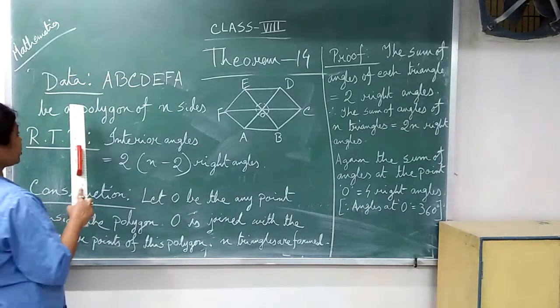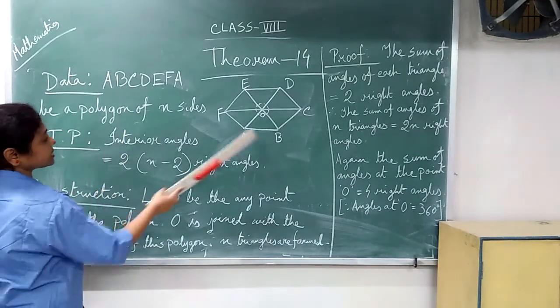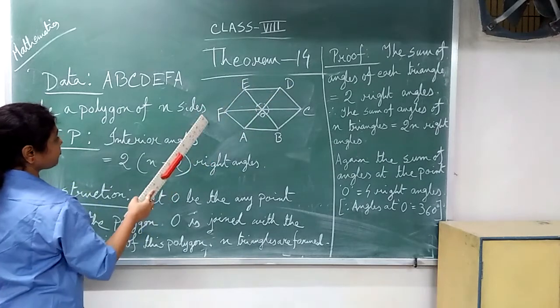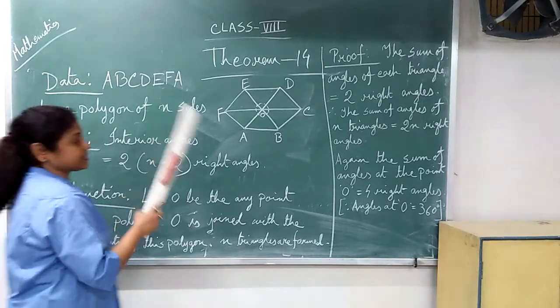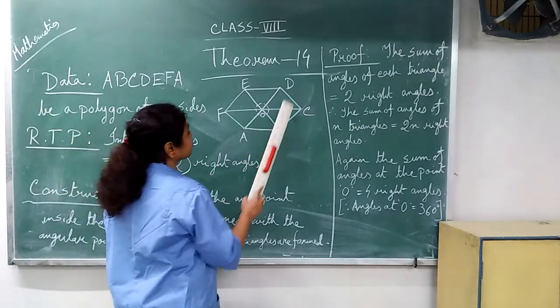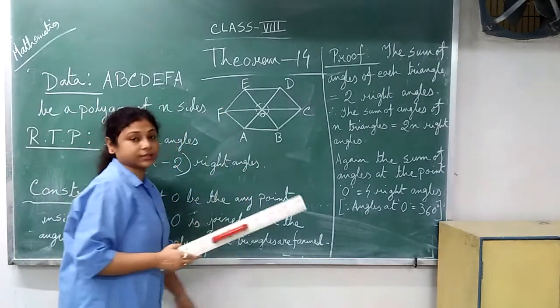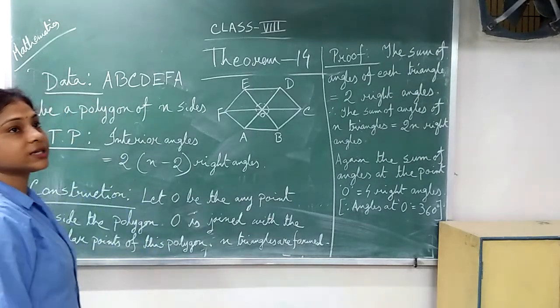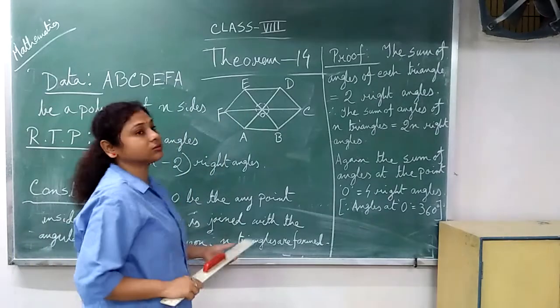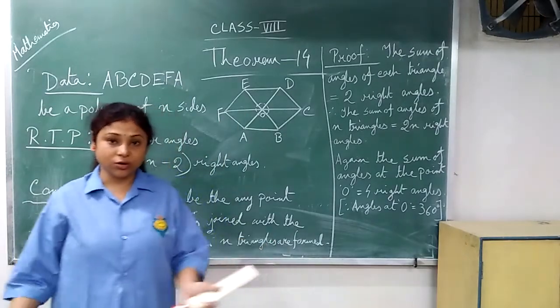I am starting the theorem. Data: ABCDEFA is a polygon of n sides. You can see 1, 2, 3, 4, 5, 6, 6 sides are there but here it will not mention because instead of 6 or hexagon you can draw triangle also.